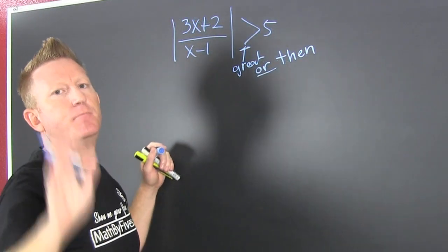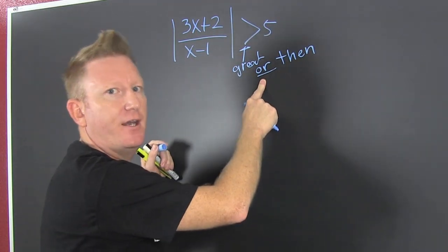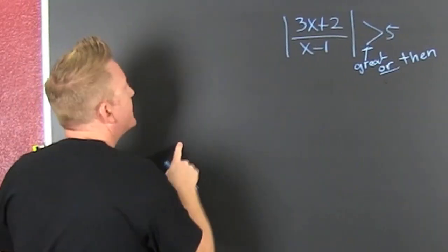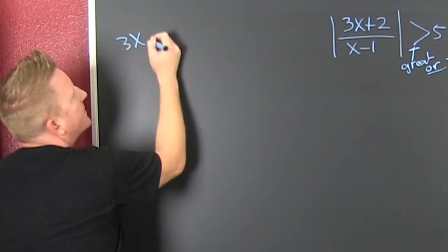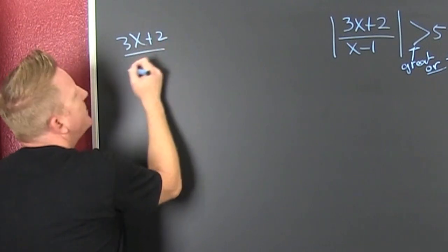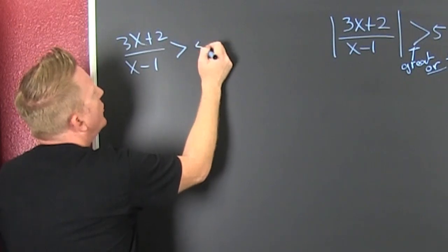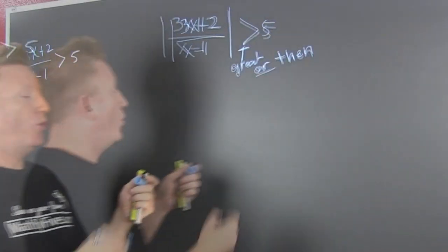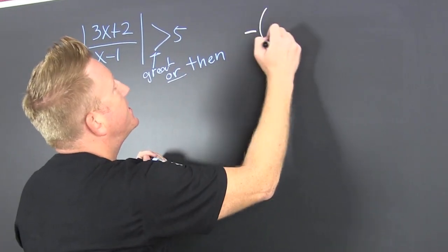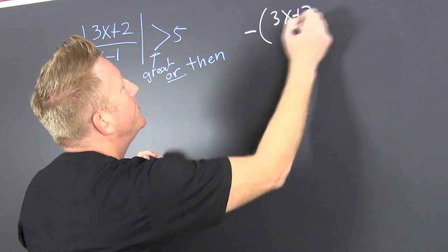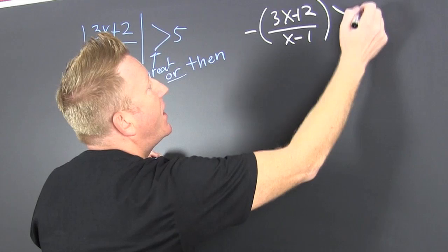It breaks up into two pieces with a big fat OR in between. So to help us get down this river, we look at (3x + 2)/(x - 1) is greater than 5, OR the other case: the opposite of (3x + 2)/(x - 1) is greater than 5.